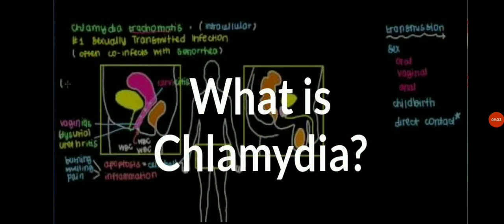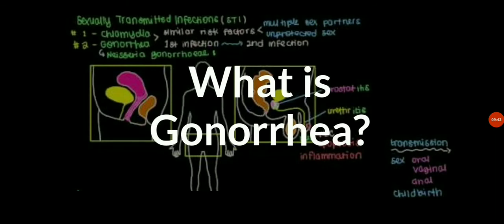Chlamydia is one of the most common STDs. It is an infection that attacks the male and female reproductive organs. It is caused by several different microorganisms that are similar to bacteria. Chlamydia infections are spread by direct sexual contact with someone who has the disease. Symptoms appear after exposure to the bacteria.